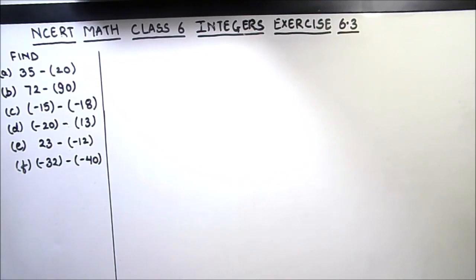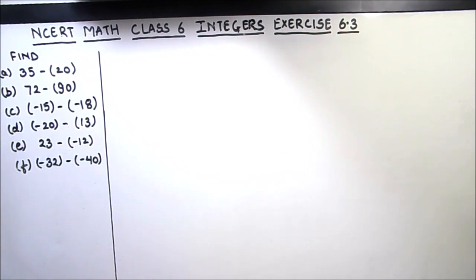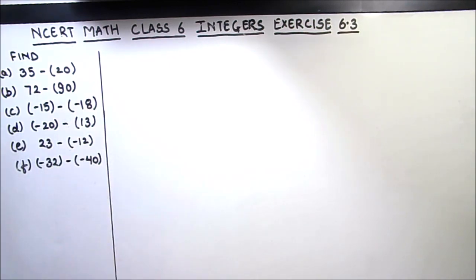Hello everyone. In this video we are going to do NCRT Math Class 6, Exercise 6.3 from the chapter of integers. We will be solving Question 1 in this video. Before starting, let us revise: all positive numbers and negative numbers together with 0 make integers. Now we have to do a few questions on subtraction of integers.